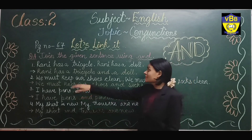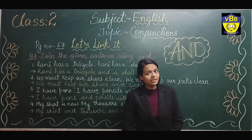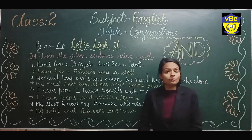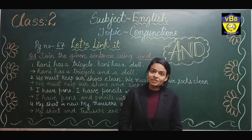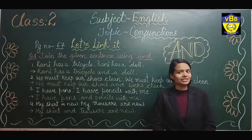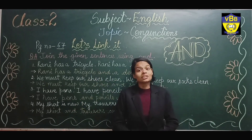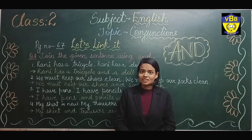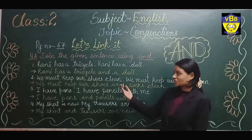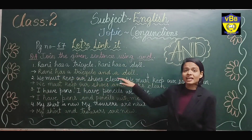Our first sentence is: 'Rani has a tricycle.' And the second part is: 'Rani has a dog.' What is the similarity in both sentences? Both the tricycle and the dog belong to Rani. So we can rewrite this sentence using the conjunction 'and' as: 'Rani has a tricycle and a dog.'